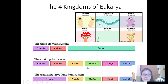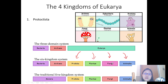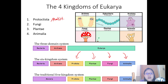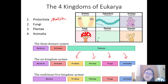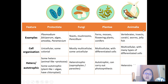Eukarya, one of the domains, can be divided into four different kingdoms: Protoctista (or Protista), Fungi, Plantae, and Animalia. Depending on what book you read, you may see Bacteria and Archaea grouped together as the kingdom Monera — that's just a side note. We are focusing on these four kingdoms.